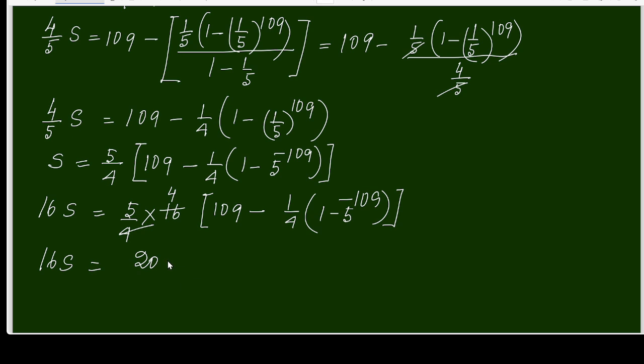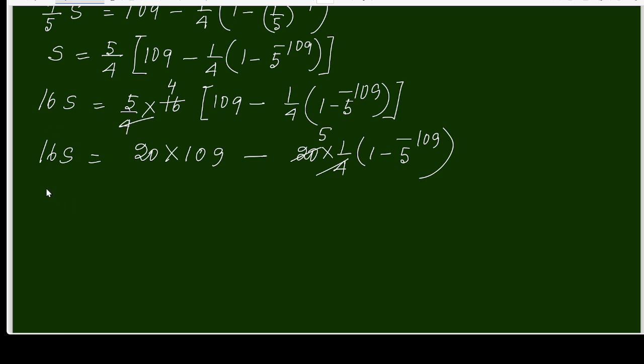It will be 20 into 109 minus 20 multiplies 1 by 4 times (1 minus 5 to the power minus 109). I can cancel this: 16S equals (multiplying) 2180 minus (this will be 5 plus 5 times negative 108), which is 5 power negative 108.